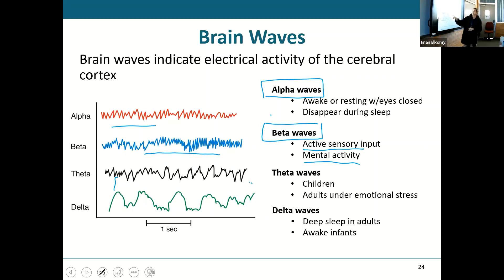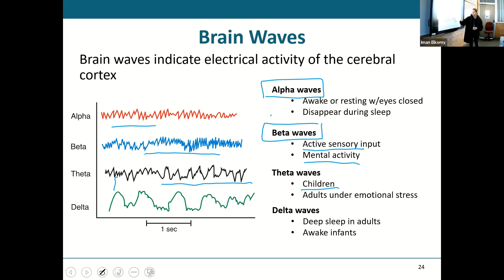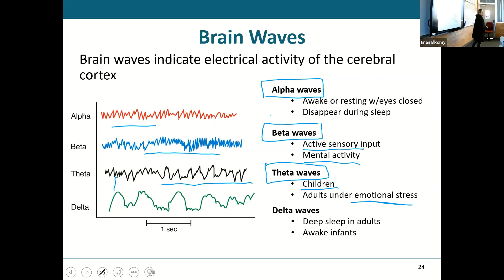Theta waves are sort of irregular, spaced further apart from each other. Those theta waves are what we see in children and in adults who are emotionally stressed — you're in an argument, you're upset, you're reading something on social media that's shocking. That's when you're going to see those theta waves.